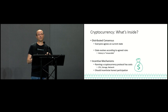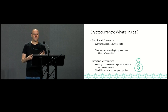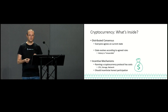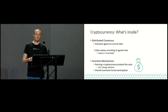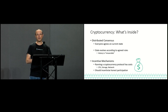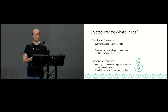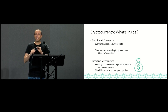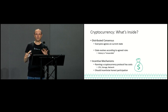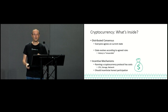The second part of a cryptocurrency is incentive mechanisms. Running a cryptocurrency has costs in CPU, storage, and network. If we want honest people to participate in this system, we have to give them some incentives — usually money. I'm coming from a cryptography background, and in this talk I'm going to mainly focus on the consensus part. The incentive mechanisms are important; I'll speak a little bit about how our consensus algorithms actually help with them.